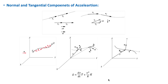If the velocity is changing only in its direction, like in motion along a curved path with a constant speed, then a is always perpendicular to the velocity at each point. So, a is in the direction of delta v. And finally, if the velocity v is changing in both magnitude and direction, then a will be directed at some angle to v.